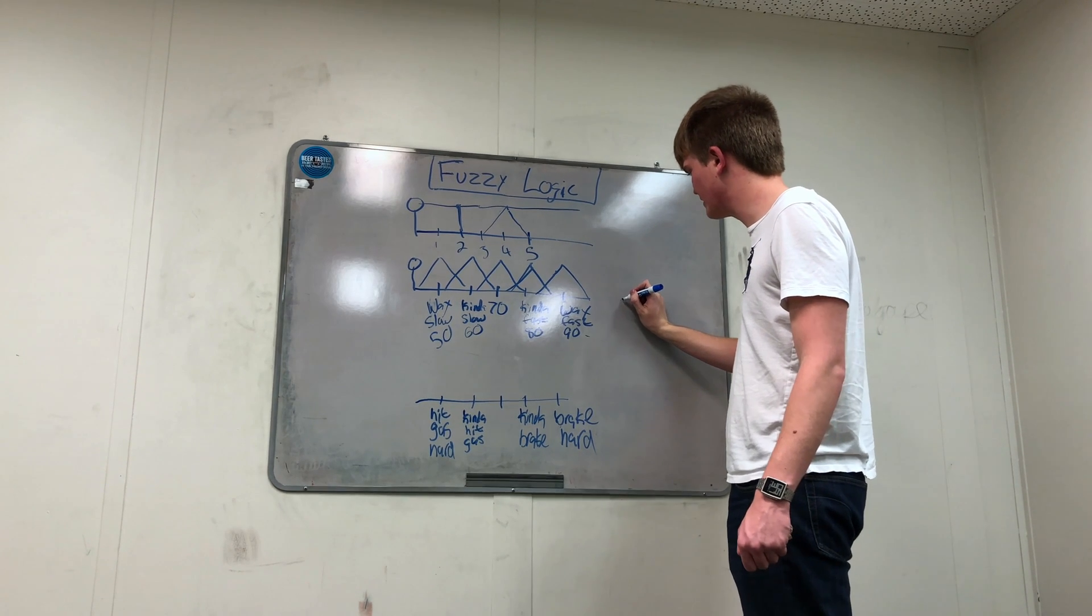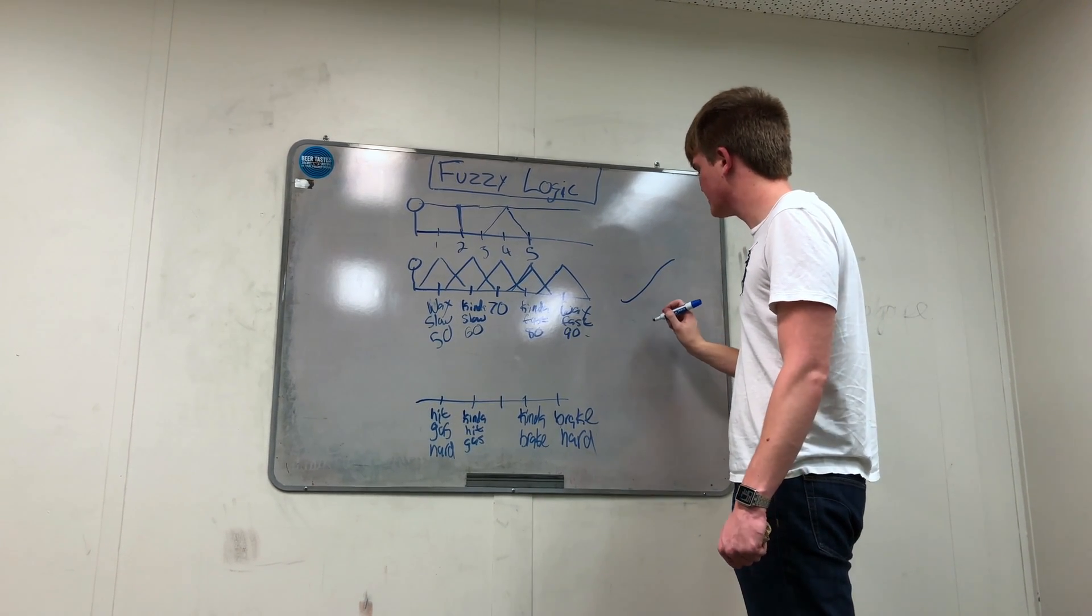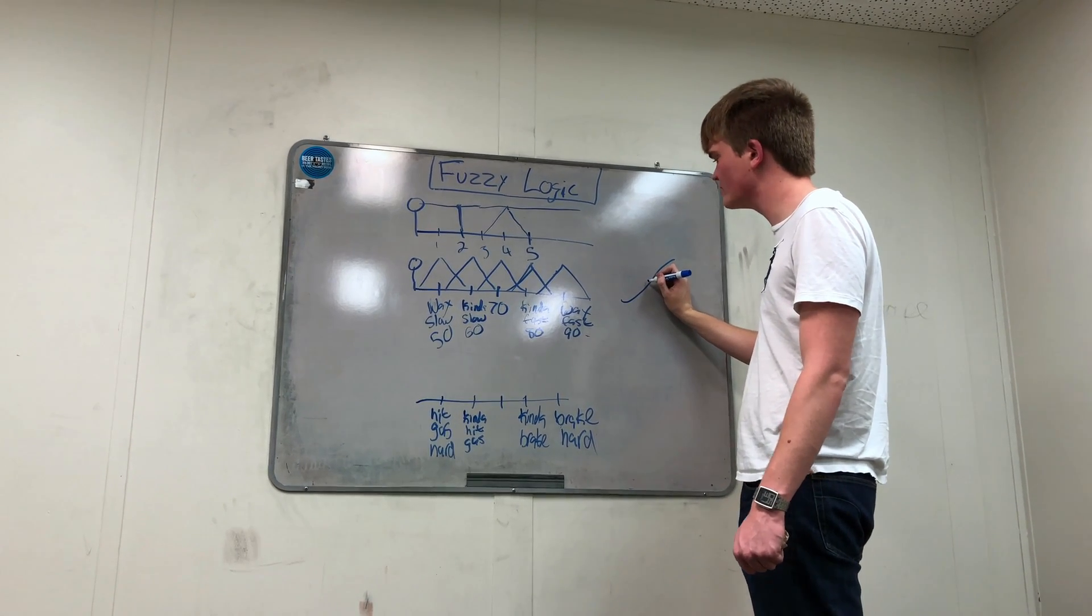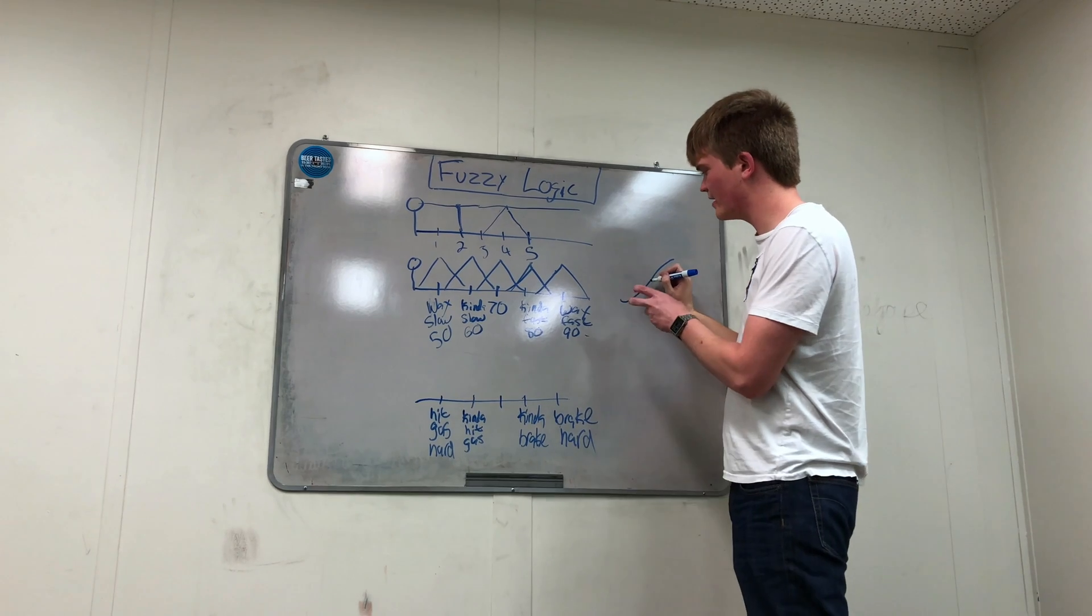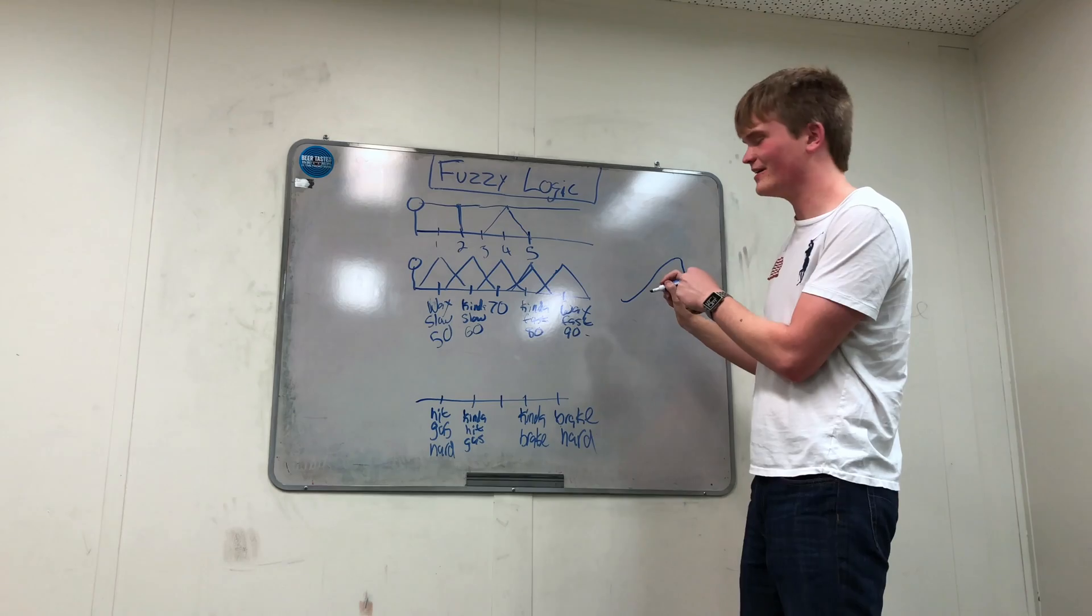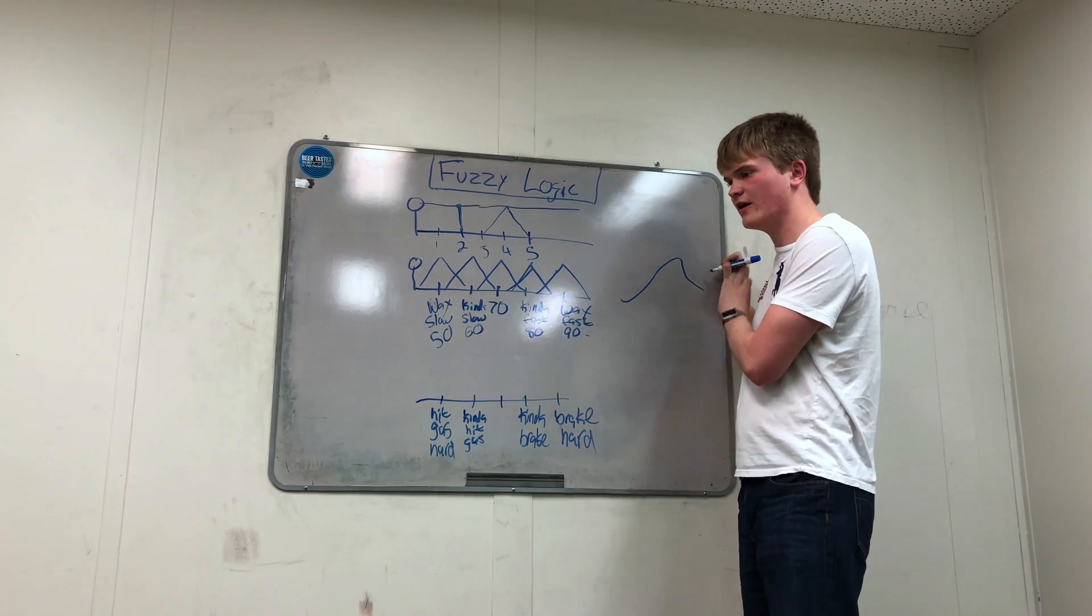Whereas as your car kind of, let's say you're going 70 miles an hour, your car kind of starts to go up a hill. So, then as it goes up the hill and as your car slows down, it should hit the gas harder and harder and harder. And then you go down the hill and now your car starts speeding up, you should hit the brake harder and harder and harder.